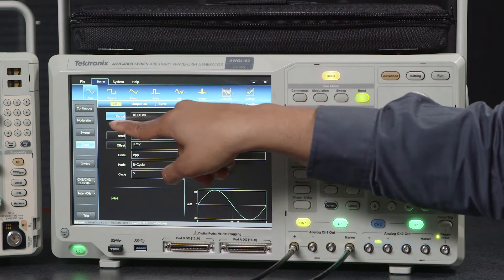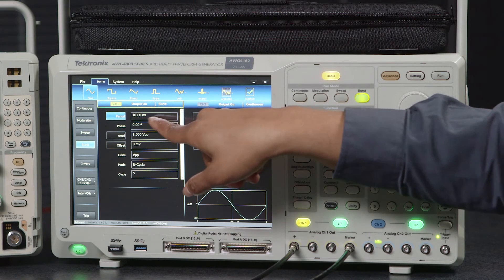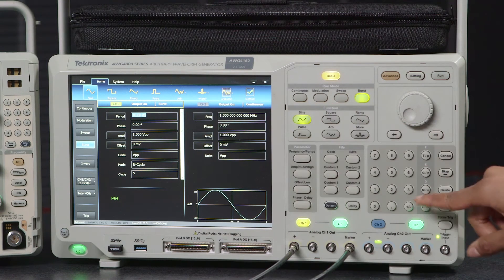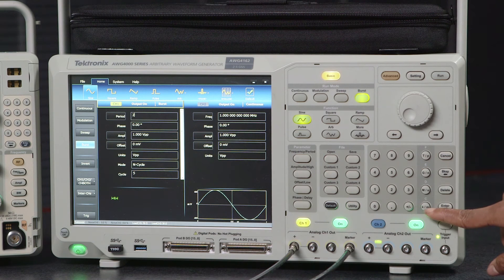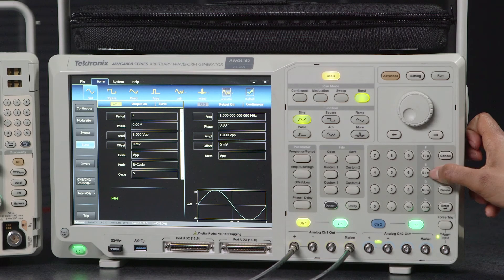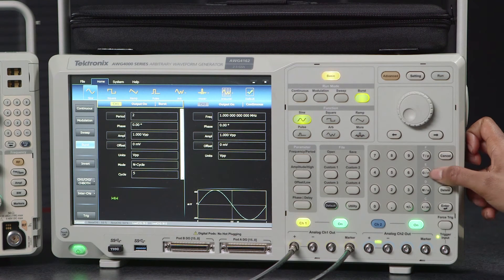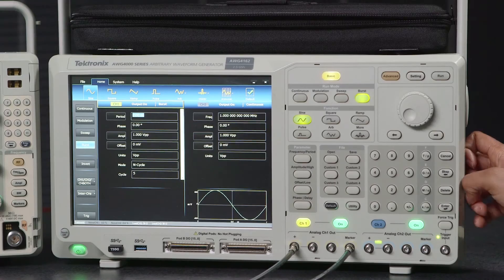Another neat feature is if we would rather change the period instead of the frequency we can change that here. Another neat feature is that instead of typing in the full number we can actually choose between nano, pico, micro and milli here on the touchpad. So if I want a 2 nanosecond waveform you can see it on the burst.